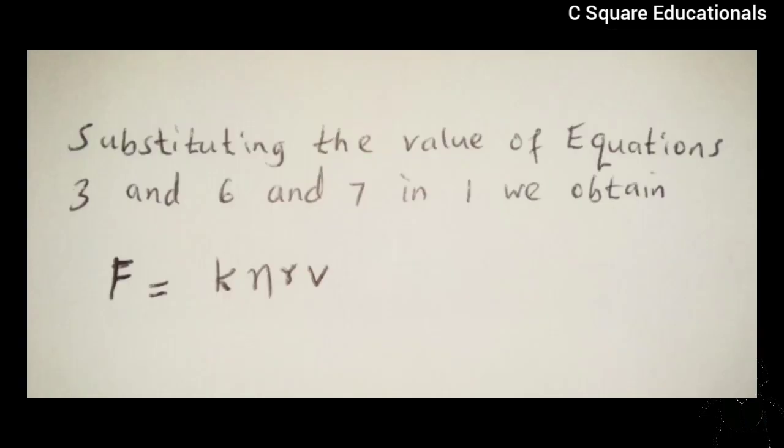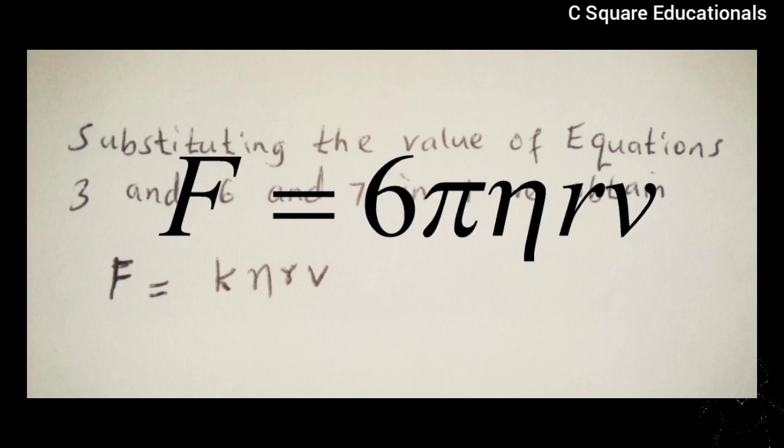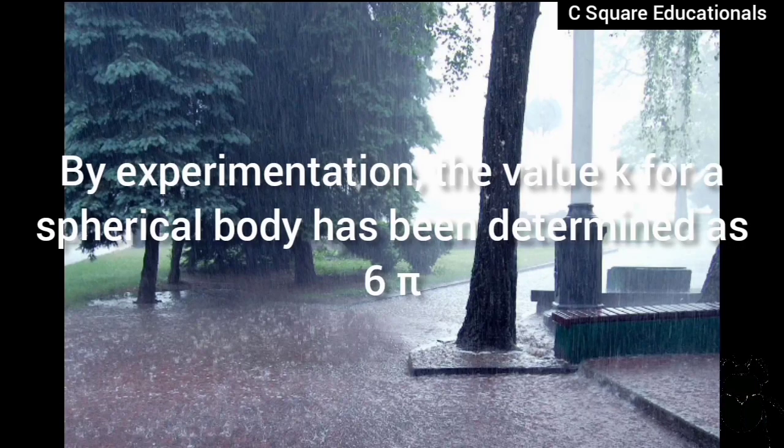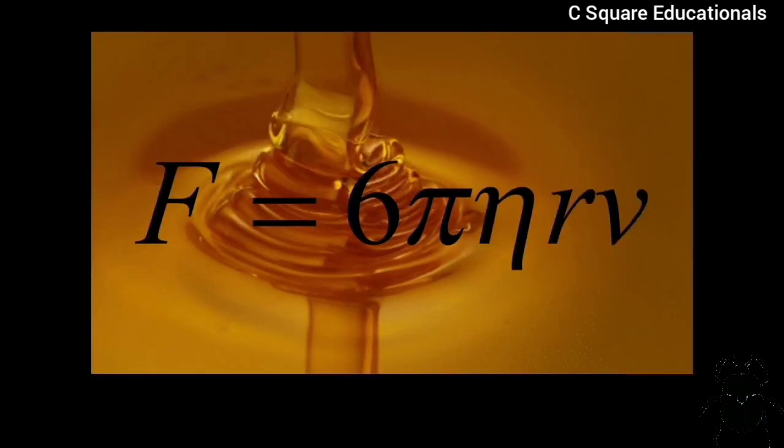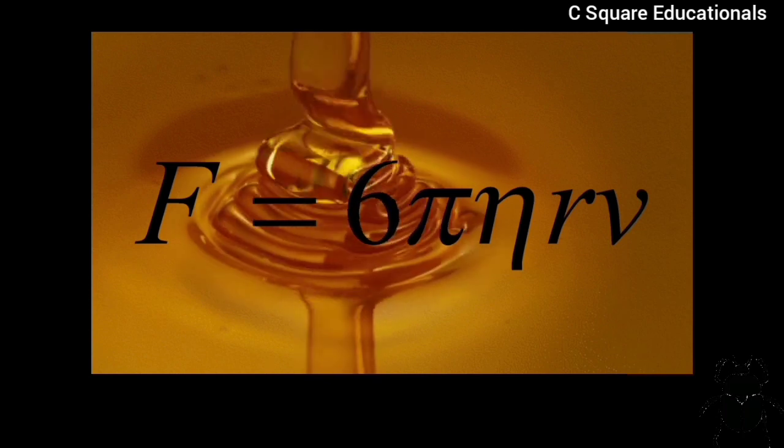Now, substituting the value of equation 3, 6, and 7 in equation 1, we obtain F is equivalent to K η R V. It has been observed and determined by experiment that the value of K for a spherical body has been determined as 6π. And thus, the equation gives the viscous force on a spherical body falling through a fluid. So, we have F is equivalent to 6π η R V.